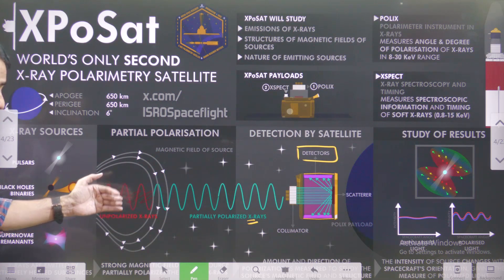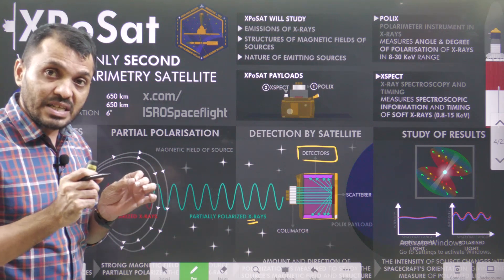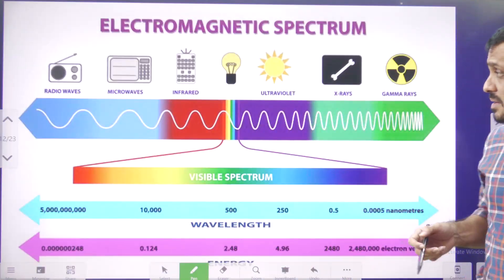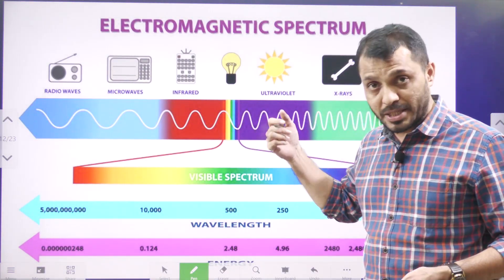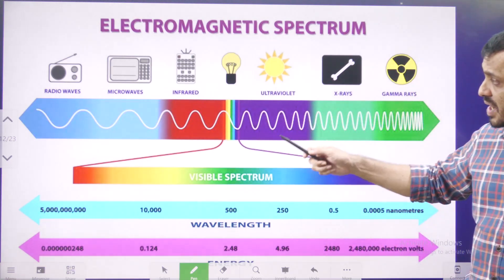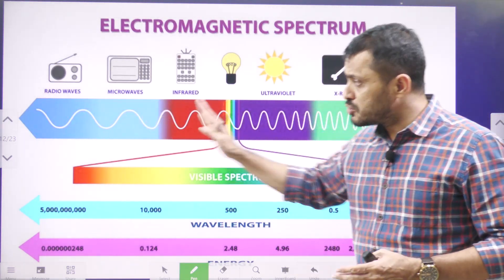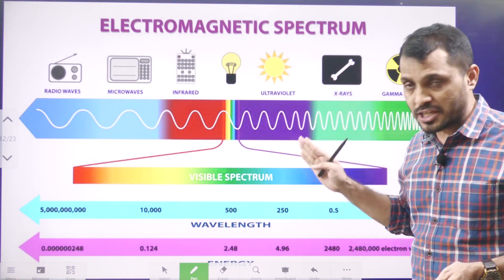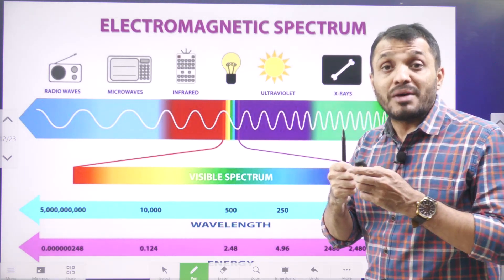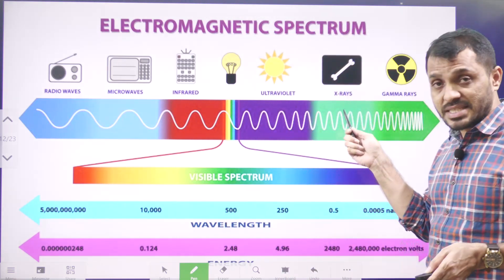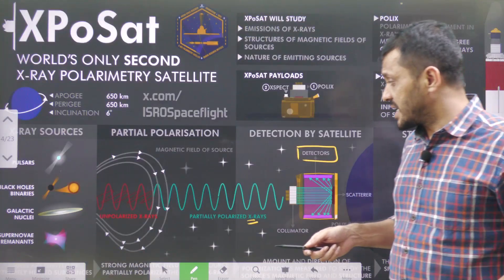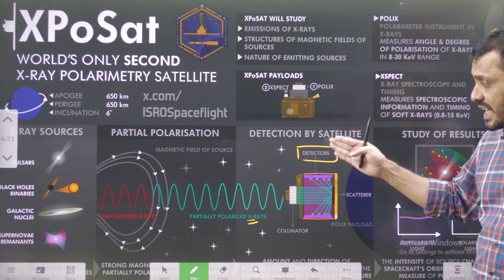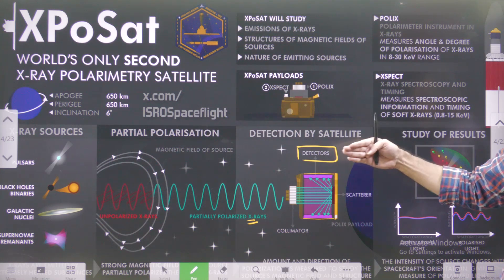X-rays are one component present in the electromagnetic spectrum. In the electromagnetic spectrum we have different rays based on their wavelength — such as radio waves, microwaves, infrared, visible, ultraviolet, X-rays, and gamma rays. As we go from left to right, the wavelength decreases, and as the wavelength decreases, the energy carried is very high. Generally, very powerful stars as well as black holes emit certain types of X-rays. By observing those X-rays, we can understand where they were emitted from and how long they traveled — these characteristics help study the origin of the universe and various stars.